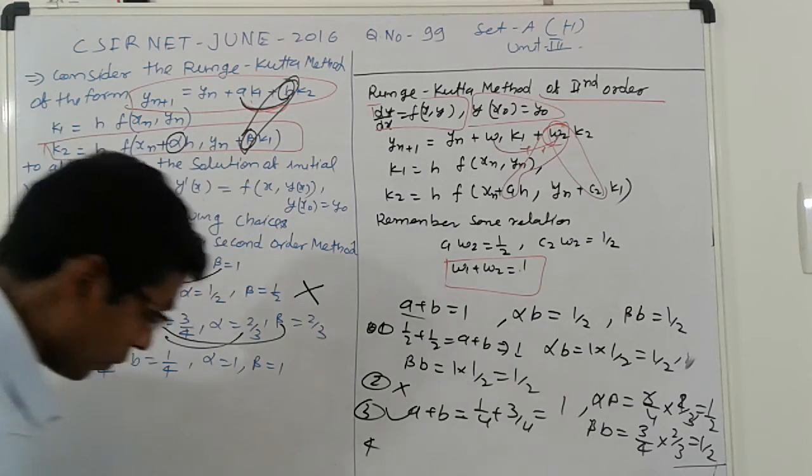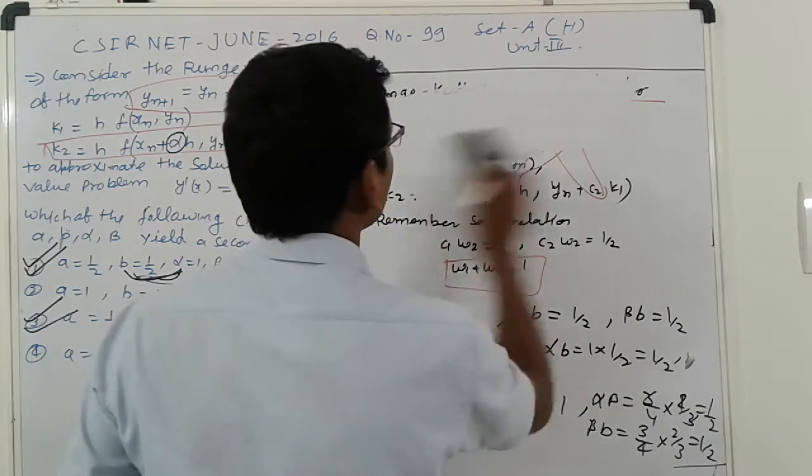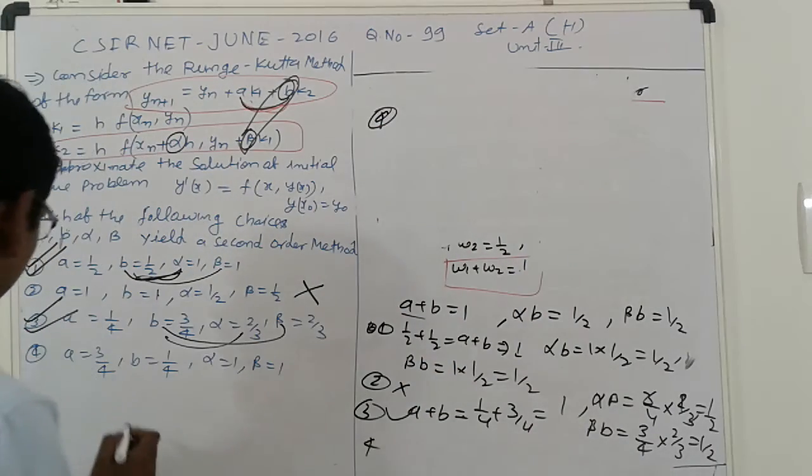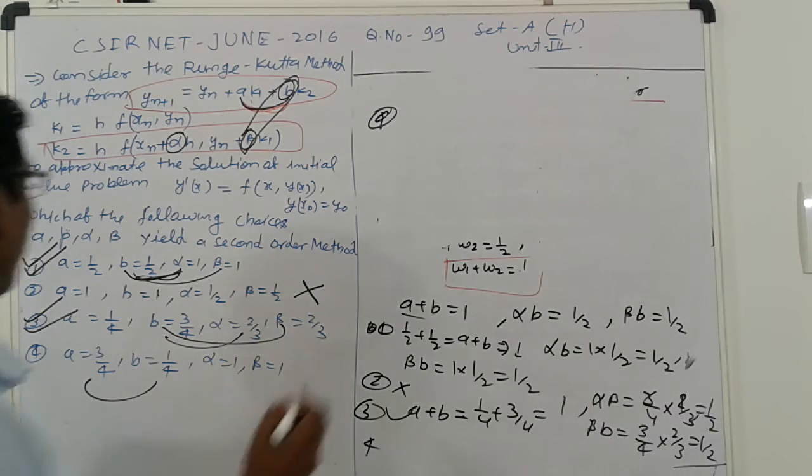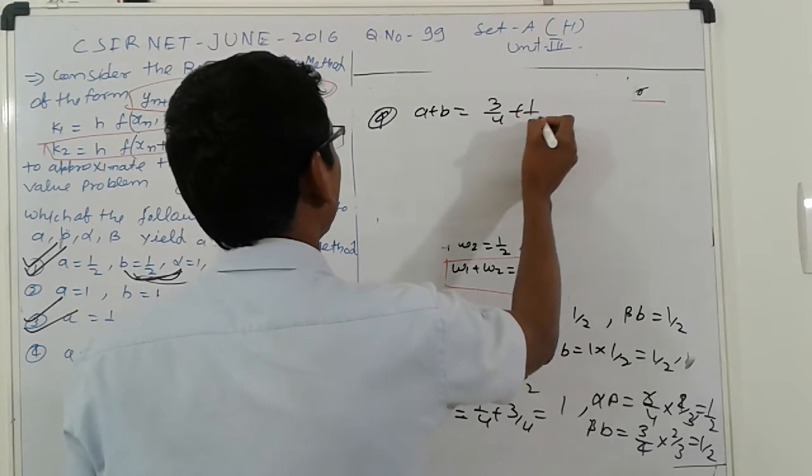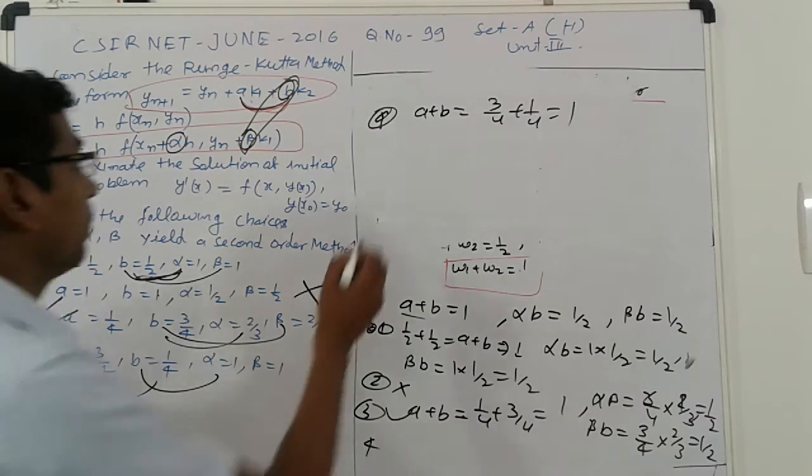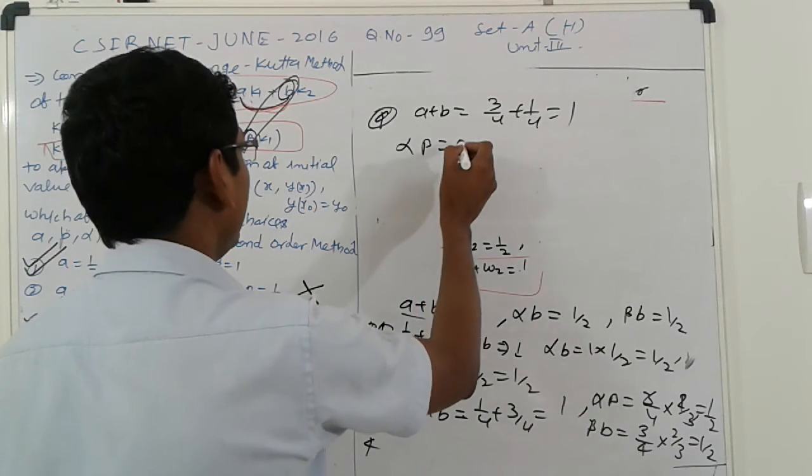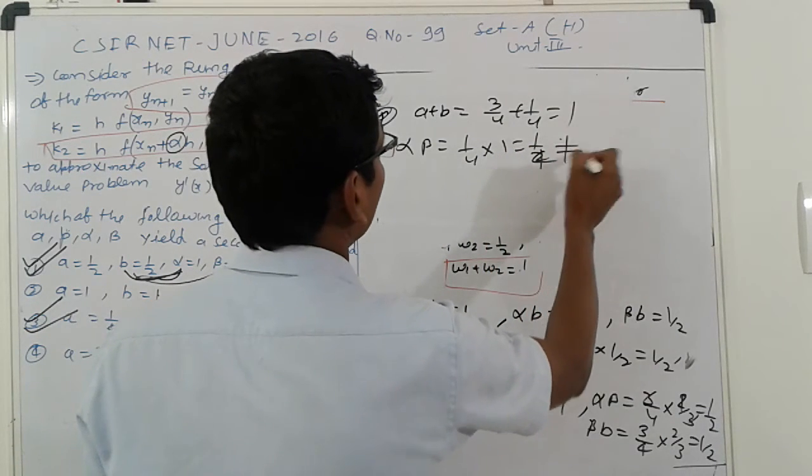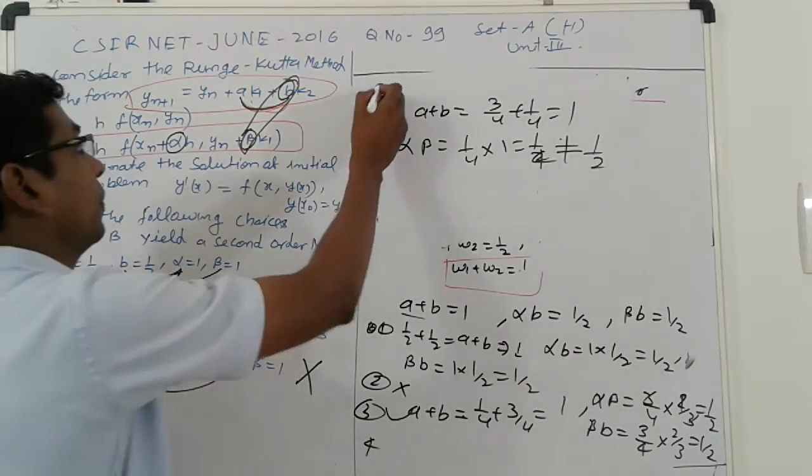Next, go to the fourth. Fourth option. Sum of this first, a+b is 1. A plus b equals 3/4 plus 1/4, that is 1, no problem. But here alpha*b equals 1/4 times 1, that is 1/4. Not equal to 1/2. So it means this fourth option is wrong.